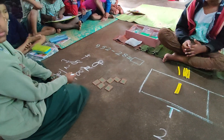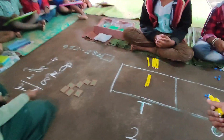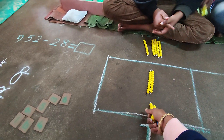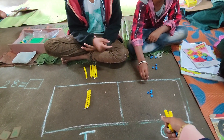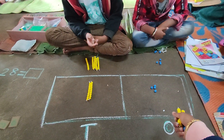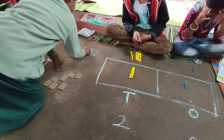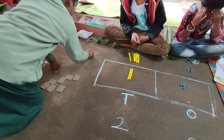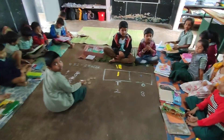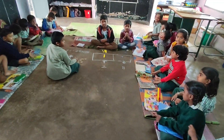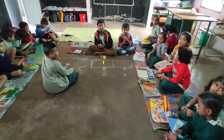Tell me now — 52 minus 28, what is the answer? 24. 2 tens make 20, and there are 4 ones. So 20 and 4 — write the answer: 24. Very good. So have you understood? Yes, sir. Understood everyone? Yes, teacher. Will you do the next sum? Yes, teacher. Okay, very good. Thank you.